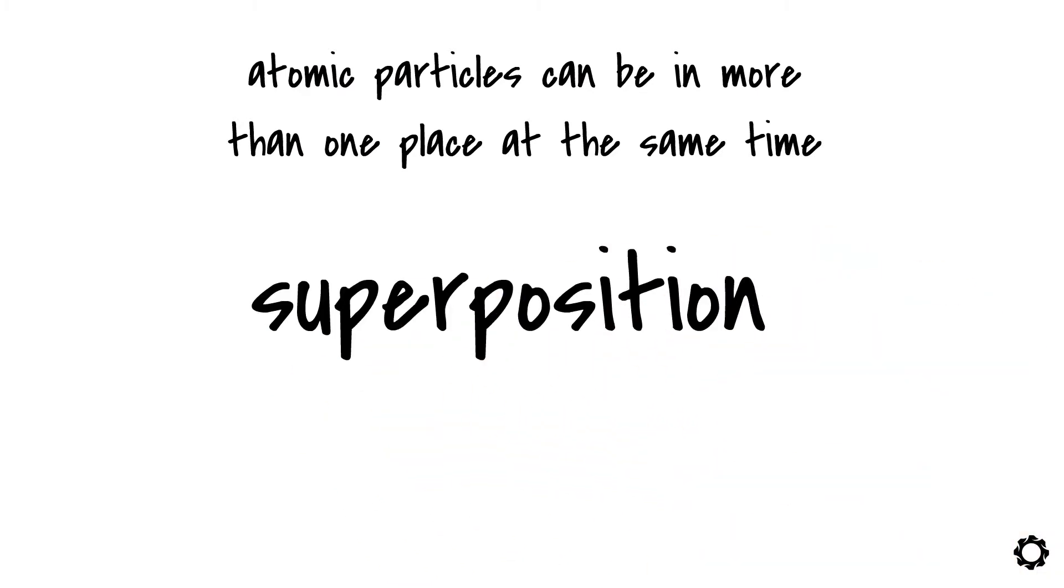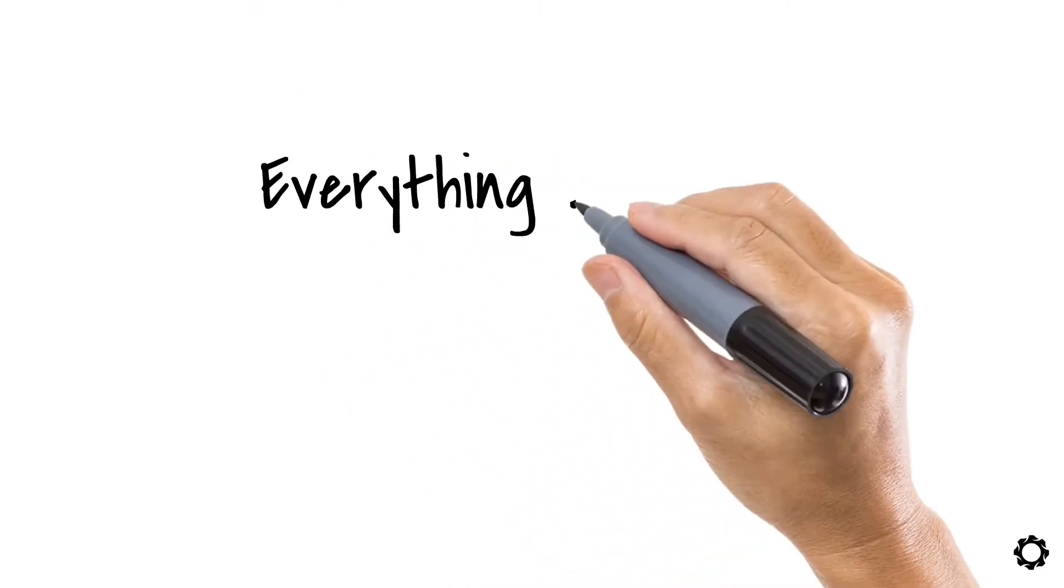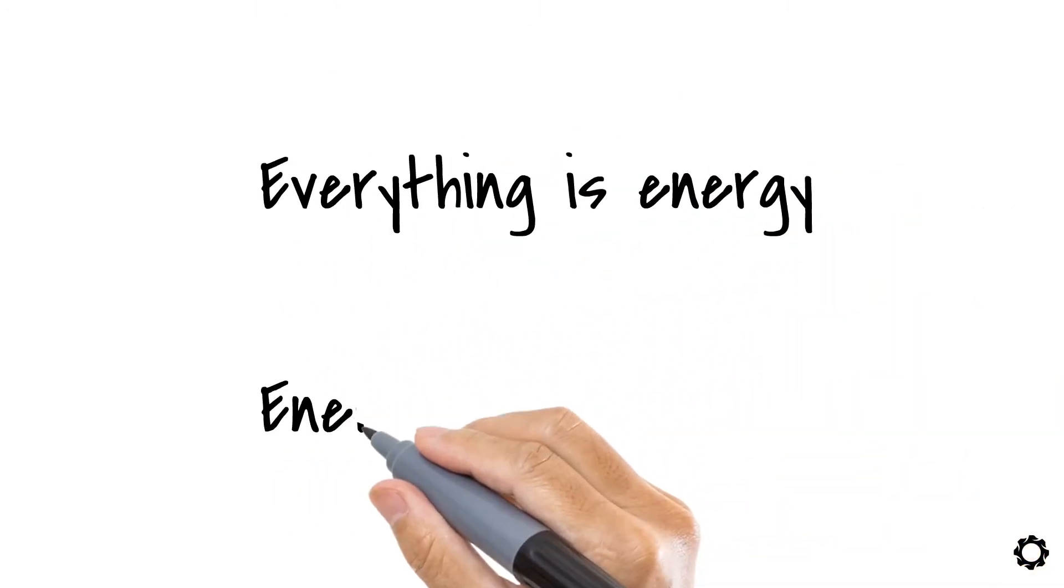This phenomenon is called superposition. Electrons are able to be in hundreds of places simultaneously, which is only possible if everything is energy. The reality is that everything is energy. And energy is everything.